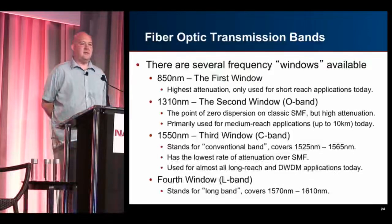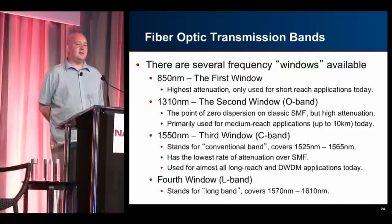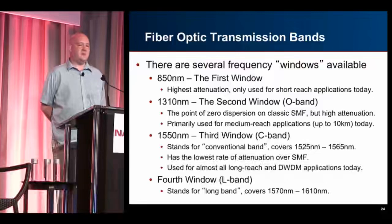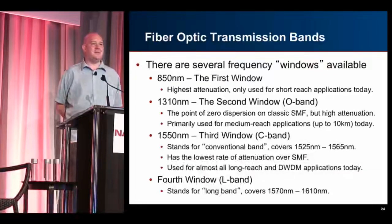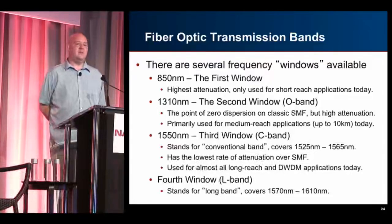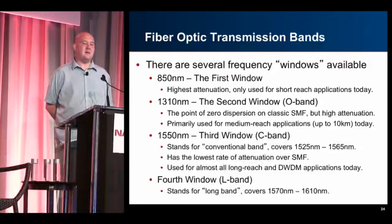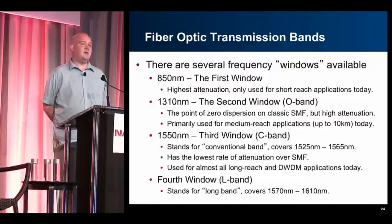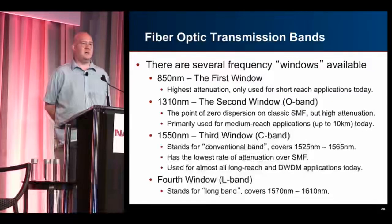There are a few fiber optic transmission bands, called windows, you need to know about. The first window is 850nm — highest attenuation, shortest reach, used for short-reach applications of tens to hundreds of meters. The second window is O-band around 1310nm — the point of zero dispersion in classic SMF, but with higher attenuation, used for medium-reach applications; most 10km optics are centered around 1310nm. The third window — C-band (conventional band) — covering 1525 to 1565nm has the lowest rate of attenuation over SMF and is also the region where erbium-doped amplifiers work. Almost everything we deal with fits in C-band.